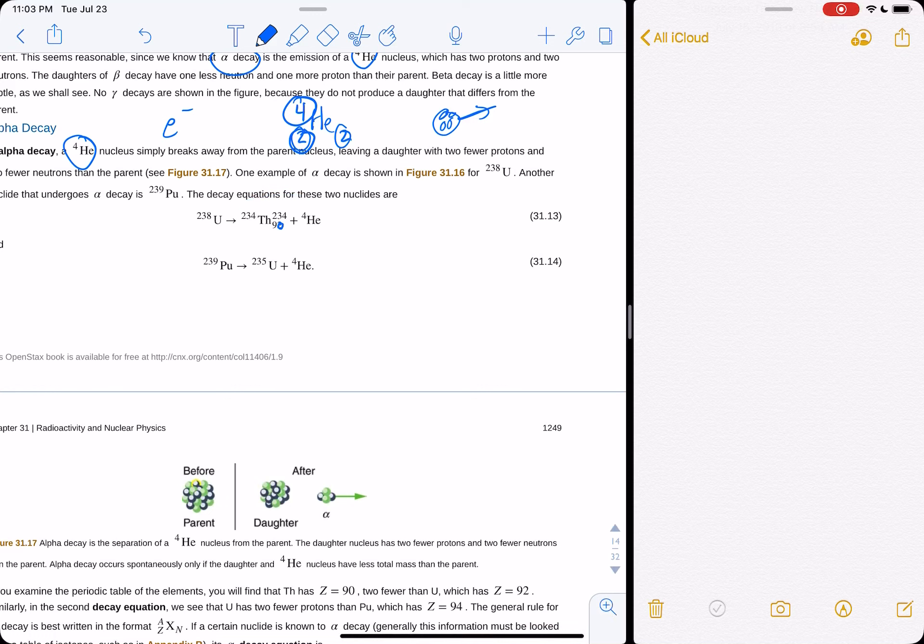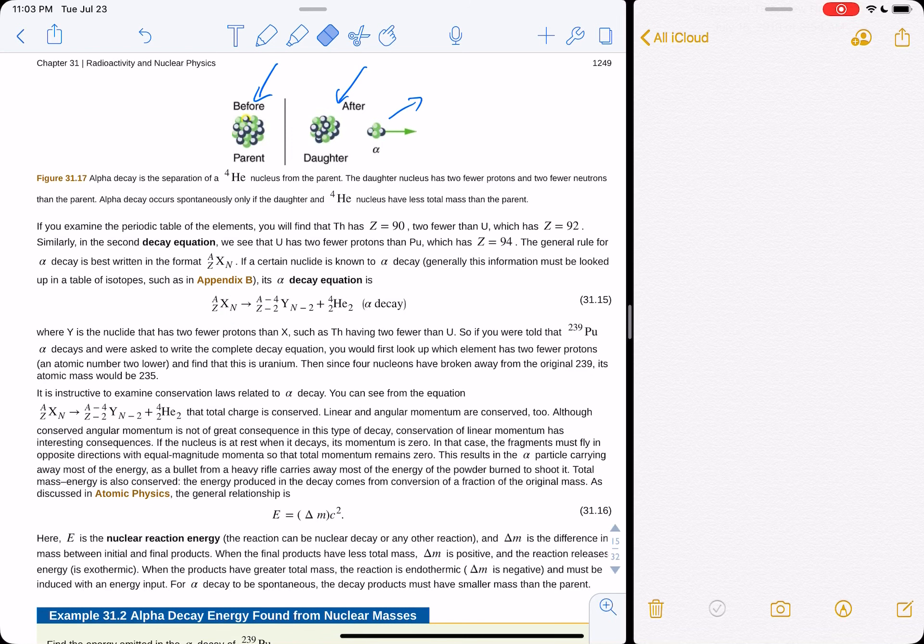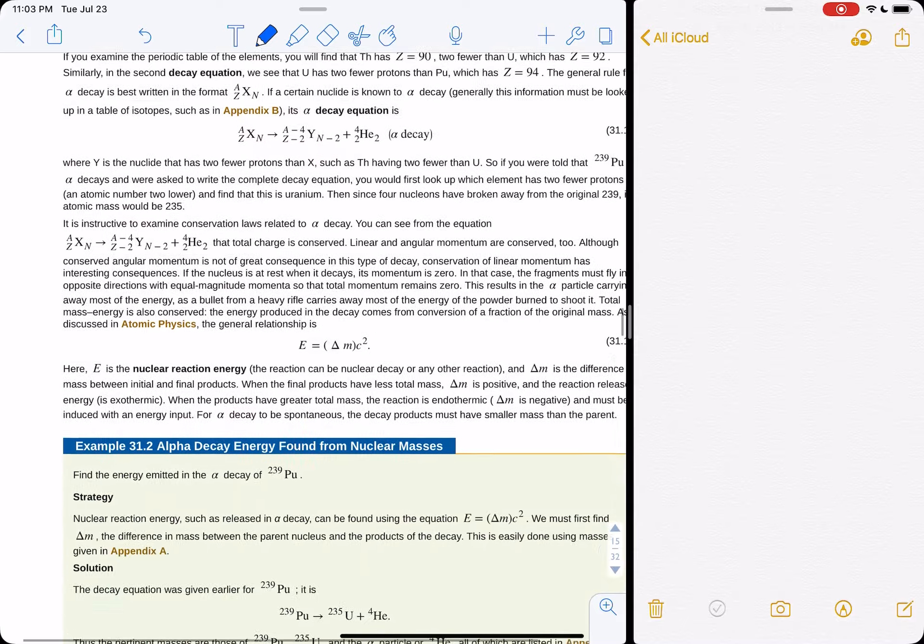So a decay, decay equation in general, you're gonna lose a certain number of total nucleons A. Some of them are gonna be neutrons, and some, sorry, protons, and some of them are gonna be neutrons. So for alpha decay, it's very simple. You just take four off the top, four off your A, two off the neutrons, two off the protons. Sorry, I keep drawing that backwards. Two off the protons, two off the neutrons. And that's what your helium nucleus is taking away. So it's pretty simple.